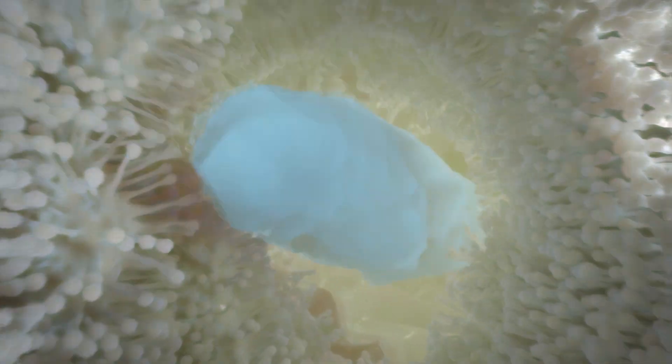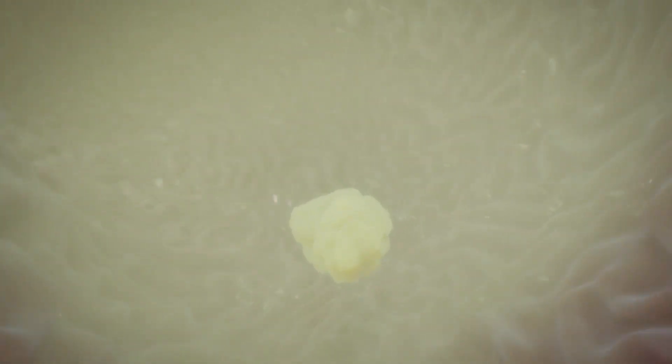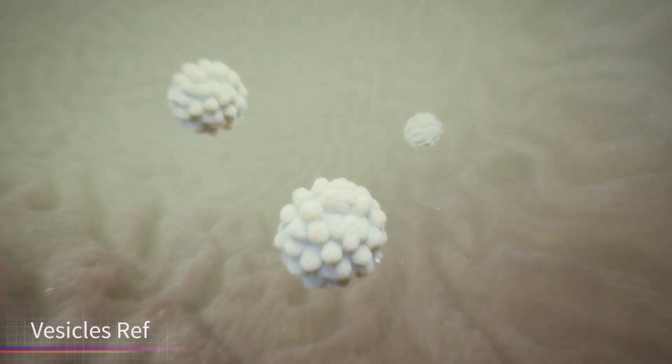When reflux occurs, the low stomach pH brings the large vesicles back together and holds the aspirin in a stable complex, preventing its direct contact with the stomach lining.